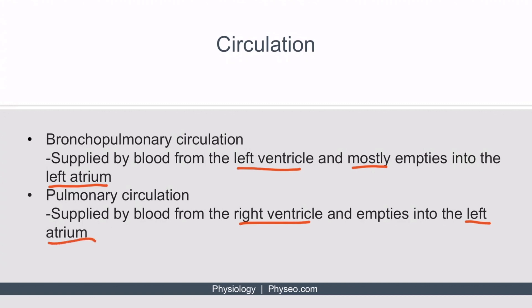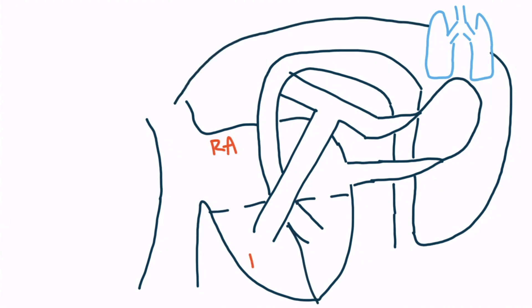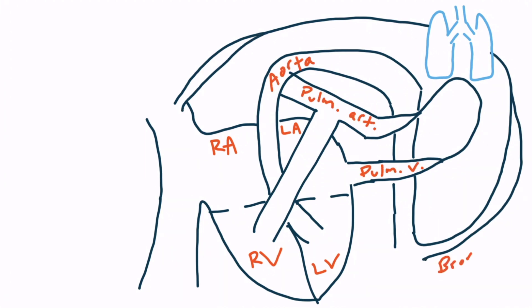Let's draw this out so you can see what I mean. Here I've drawn the heart and the lungs. This is the right atrium, the right ventricle, the left atrium, the left ventricle, the aorta, the pulmonary artery, the pulmonary vein, the bronchial artery, as well as the azygous and hemiazygous veins.